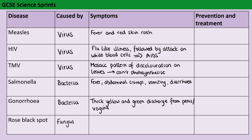Rose black spot, as the name would suggest, causes purple or black spots on the leaves. This is going to affect the ability of the plant to do photosynthesis, which may lead to it being a bit stunted. Eventually the leaves will turn yellow and just drop off.